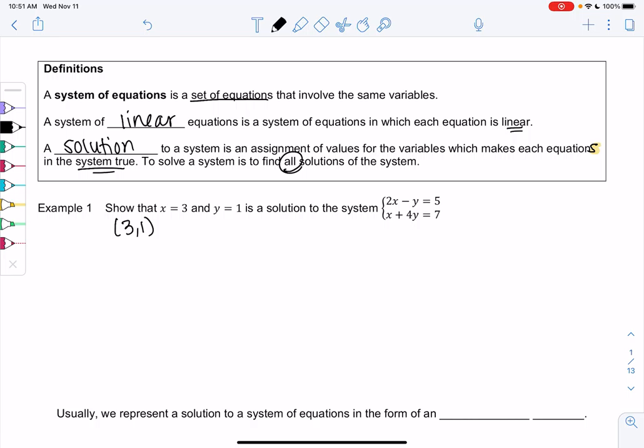So let's show in example 1 that x equals 3 and y equals 1, we often write it as an ordered pair, 3, 1, is a solution to the system. 2x minus y equals 5, and x plus 4y equals 7. It's a system because there's more than one equation.